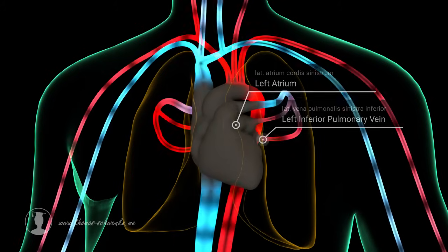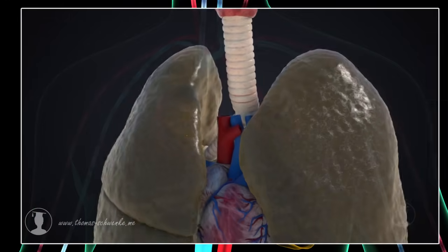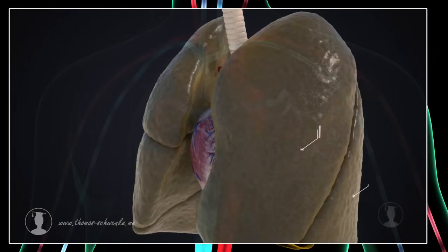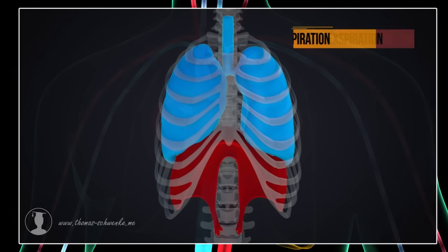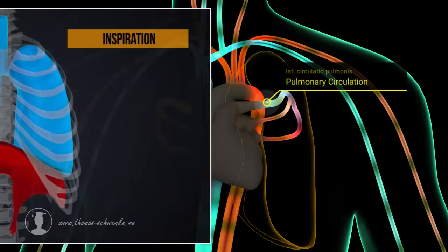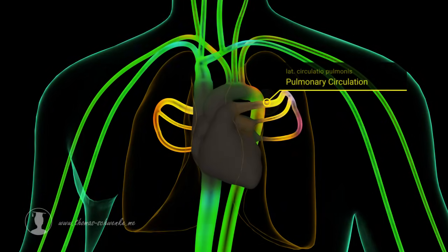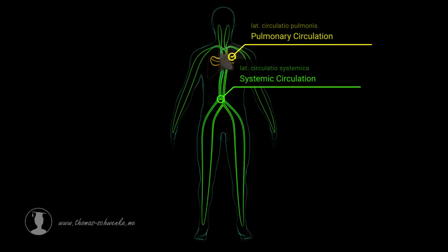The anatomy and function of the lungs can be seen in the animation on this channel. As the pulmonary circulation is short but the systemic circulation is long, the heart chambers require muscles of different strengths.